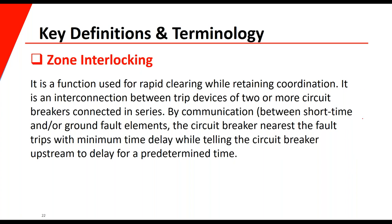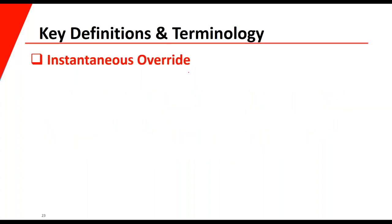Zone interlocking is a function found on some trip devices used for rapid clearing while retaining coordination. It's an interconnection between trip devices of two or more breakers connected in series. By communication between the short time or ground fault trip elements, the circuit breaker nearest the fault trips with minimum time delay while telling the upstream circuit breaker to delay for a predetermined time — basically saying, 'I'm going to trip; the fault is behind me. If I don't trip, then you go ahead and trip.' A lot of facilities don't use zone interlocking, but in some cases it may be a useful feature.